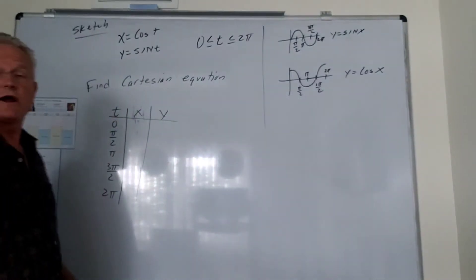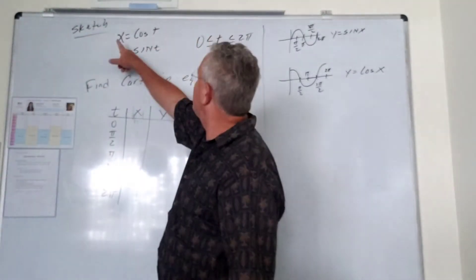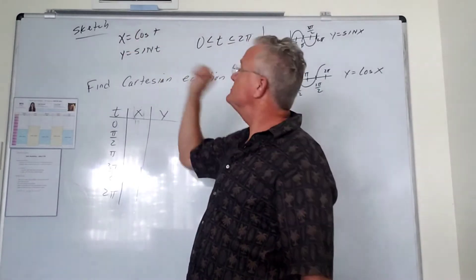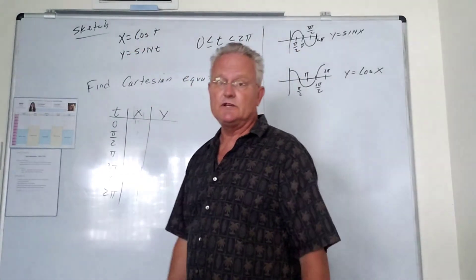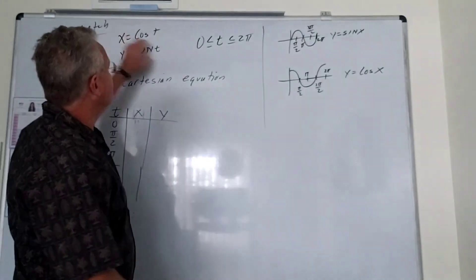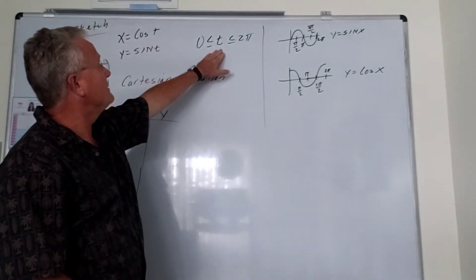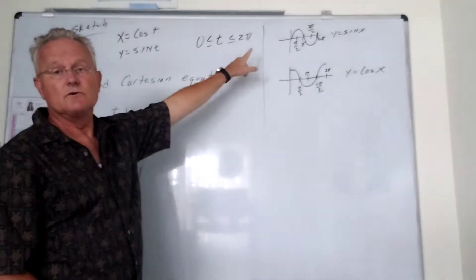Okay, so in this example we're asked to sketch the graph of these Cartesian equations: x equals cosine t and y equals sine t. And we're asked to do it between 0 and t is between 0 and 2 pi.